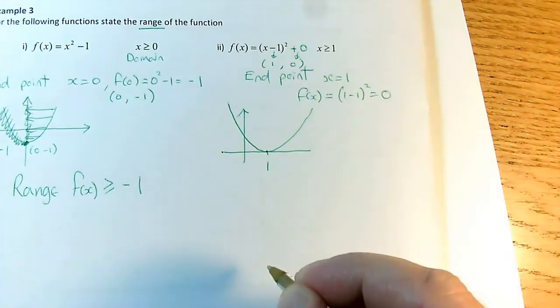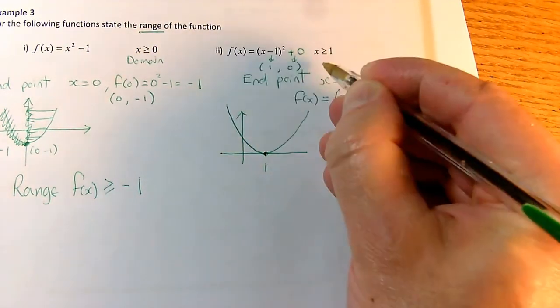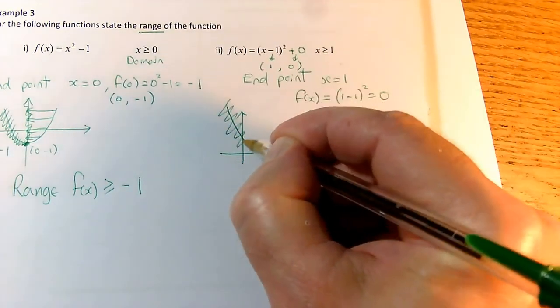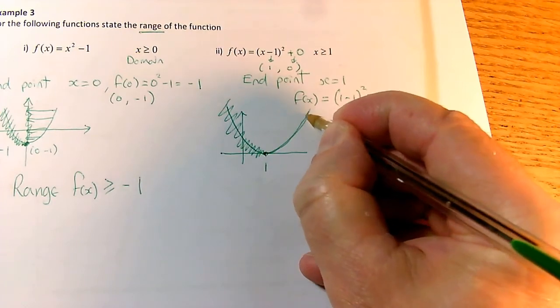But I've got the endpoint. The endpoint was (1, 0), so this is an endpoint. I don't want any x values less than 1, so I don't want this part of the graph. This is the part of the graph that I want.